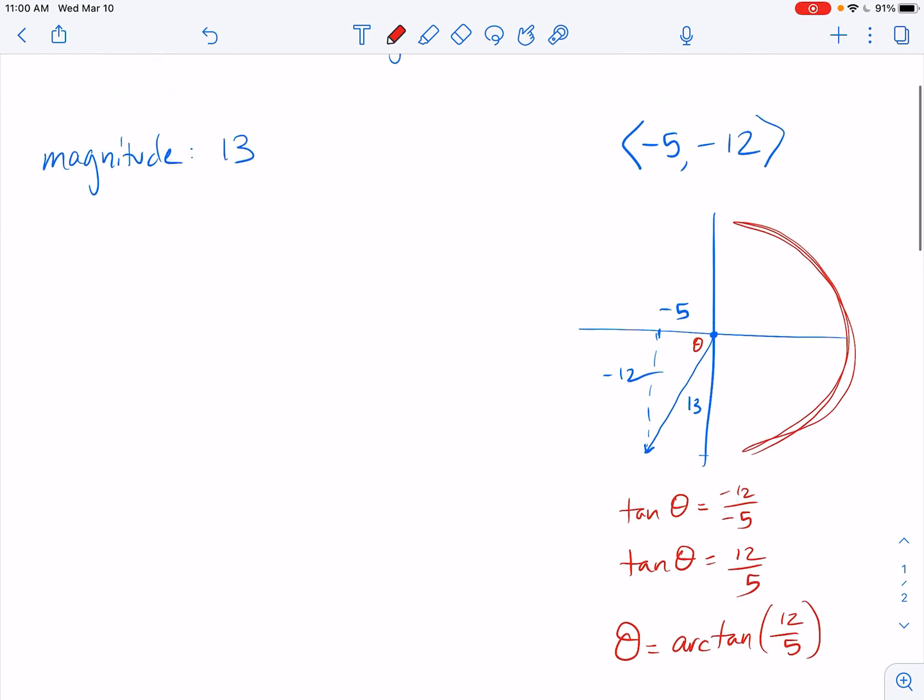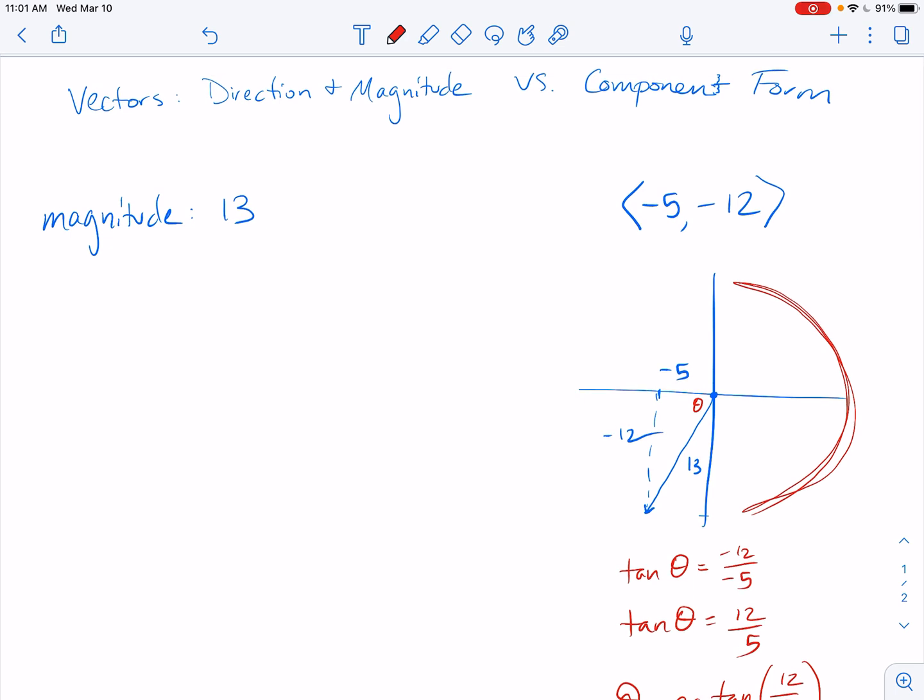So with this particular problem, you could tell me the magnitude is 13 and the direction, if you're talking unit circle, you could tell me the direction is arc tan, what did we say, 12 over 5. But then we need to add, well typically we do vectors in degrees and not radians. So you could add 180 or you could add pi.